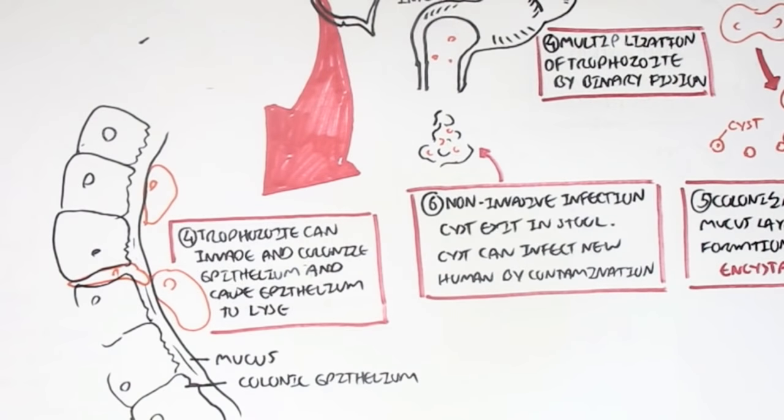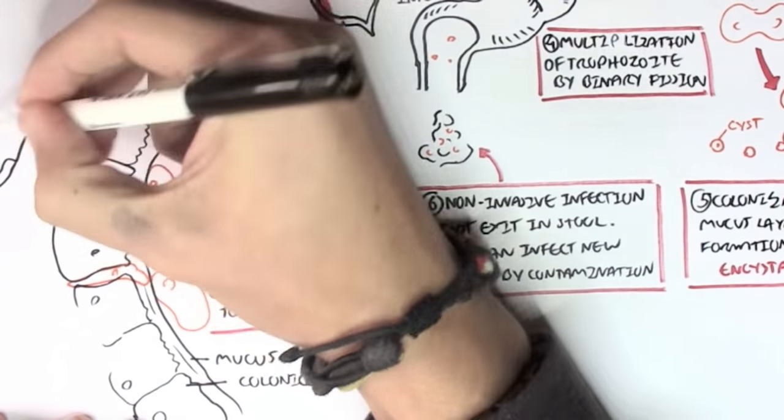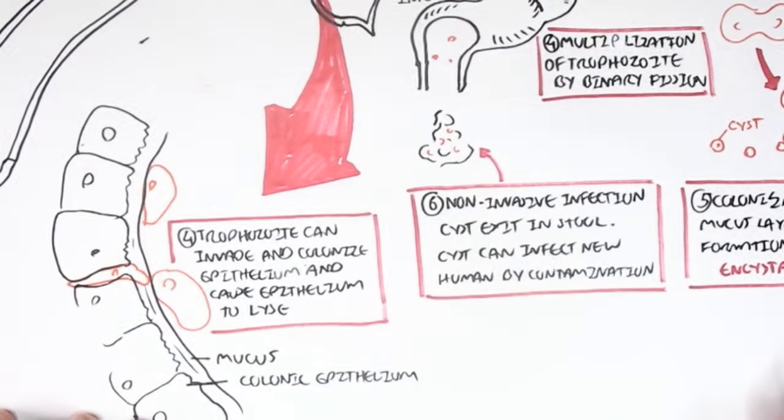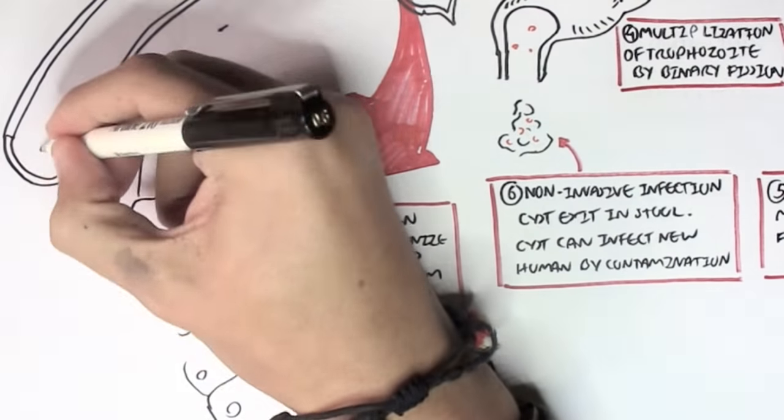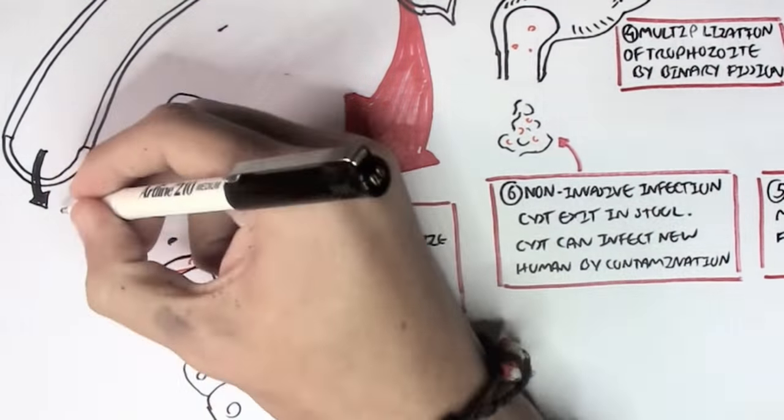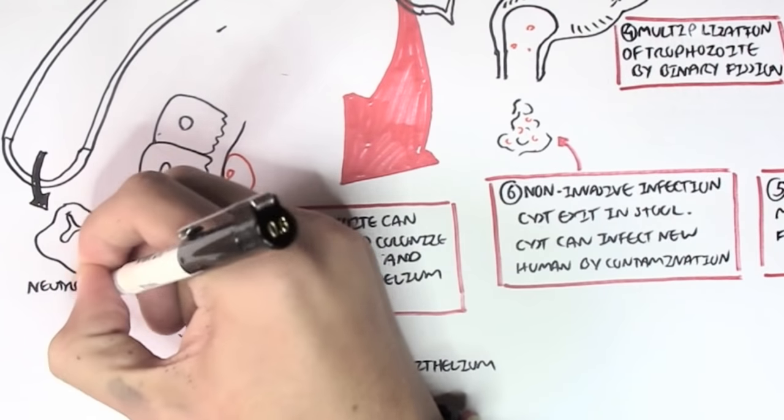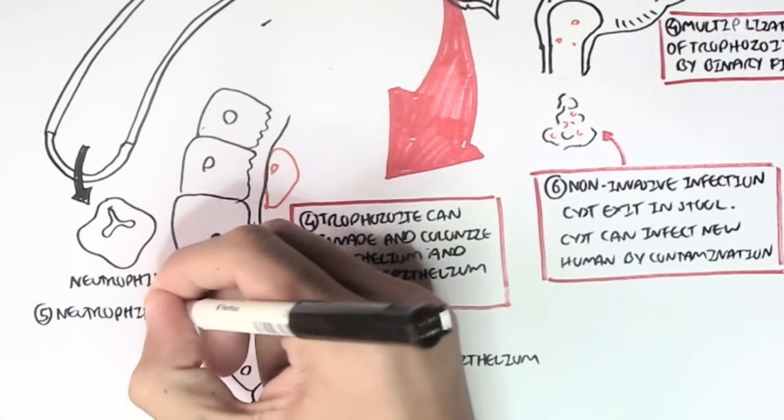This will create ulcers within the large intestines. And of course, because they are trying to invade a cell within the body, there will be an immune response. For example, neutrophils will respond to the invasion and cause further damage through lysing itself.